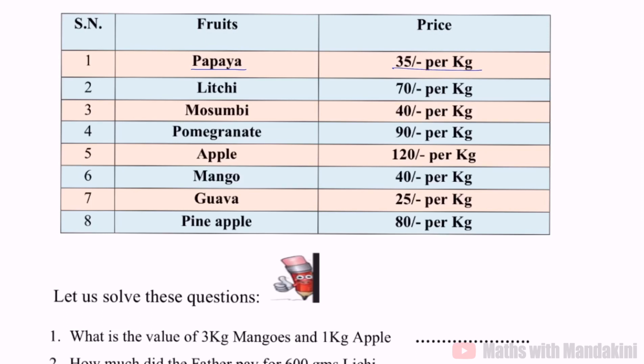Papaya 35 rupees per kg, litchi 70 rupees per kg, mossambi 40 rupees per kg, pomegranate 90 rupees per kg, apple 120 rupees per kg, mango 40 rupees per kg, guava 25 per kg, and pineapple 80 rupees per kg. So this is the rate list.